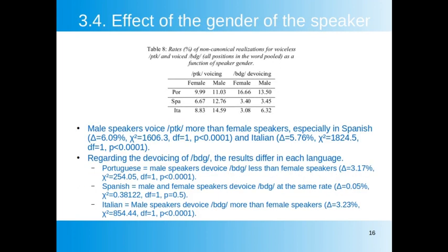In this last part, we provide preliminary results on the effect of gender on voicing alternations in Portuguese, Spanish, and Italian; gender labels were not available for most of the French and Romanian data. Table 8 displays rates of non-canonical realizations of voiceless stops (left) and voiced stops (right) with regard to speaker gender. Male speakers voice voiceless stops more than female speakers, especially in Spanish and Italian. In Portuguese, male speakers devoice voiced stops less than female speakers, and the difference is larger than that between female and male voicing rates. In Spanish, male and female speakers devoice at the same rate, suggesting voicing of voiceless stops may have a different sociolinguistic effect. In Italian, male speakers devoice voiced stops more than female speakers, suggesting both laryngeal-feature alternations pattern similarly from a sociolinguistic point of view.